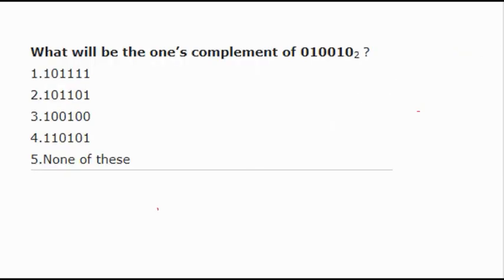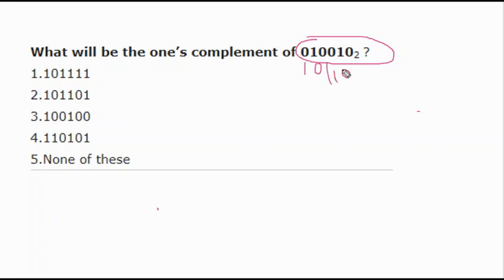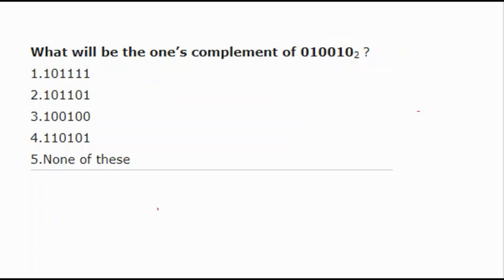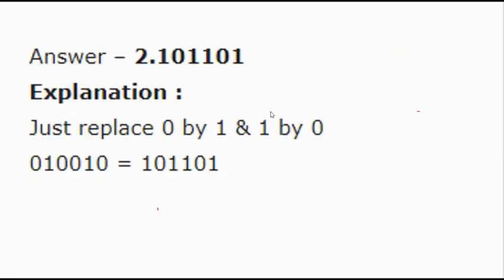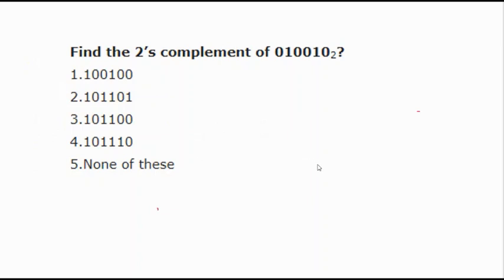Next question: the binary number is already given. Find the one's complement directly. Just flip every bit: 1 0 1 1 1 0 1 → 0 1 0 0 0 1 0. Wait — the given binary is shown and its complement is written. It only takes five to ten seconds if you know the method. Don't neglect this topic.